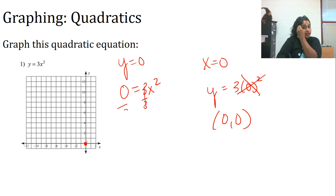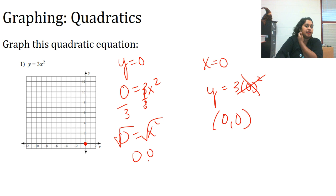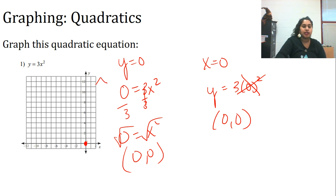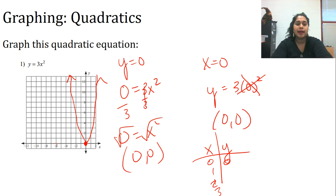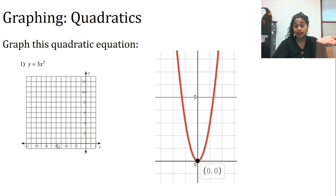Dividing by 3, 0 divided by 3 is still 0, so I also get (0, 0) — the same point. If I remember anything about positive quadratics, I know it's going to go up. I could do a t-chart with x = 1, 2, 3, 4. We're just doing basic sketching to get a general feel. And there we go — that's kind of what my graph looks like.